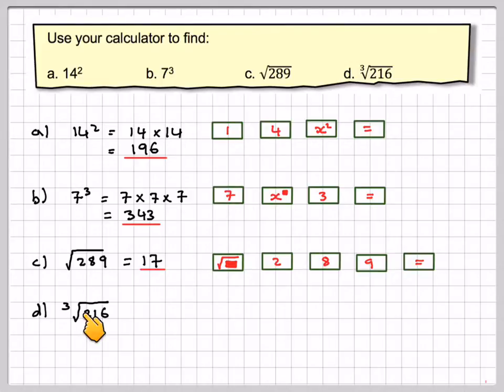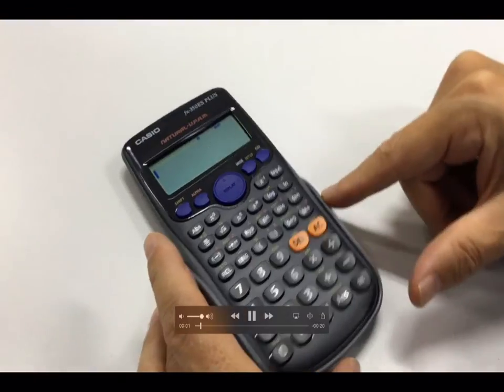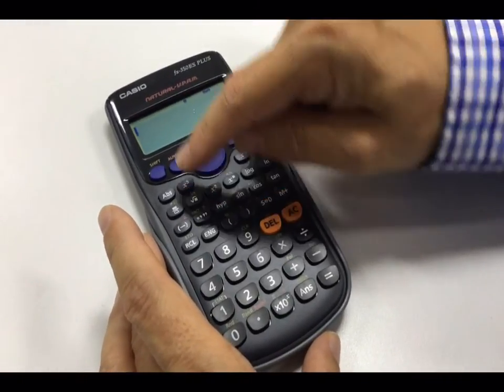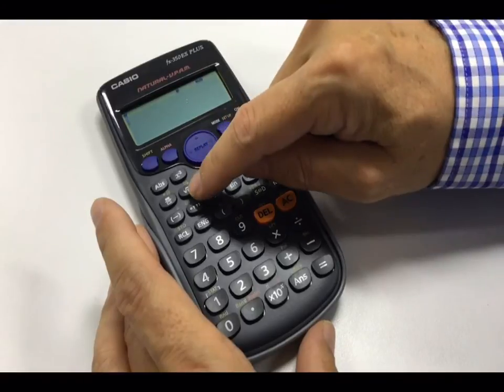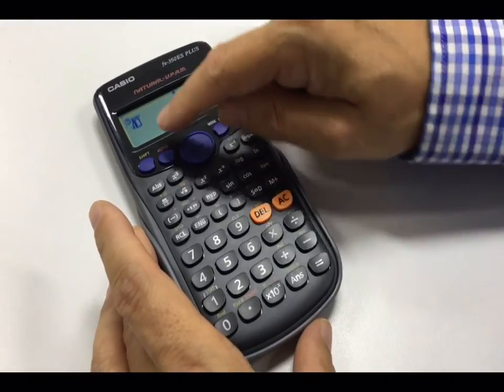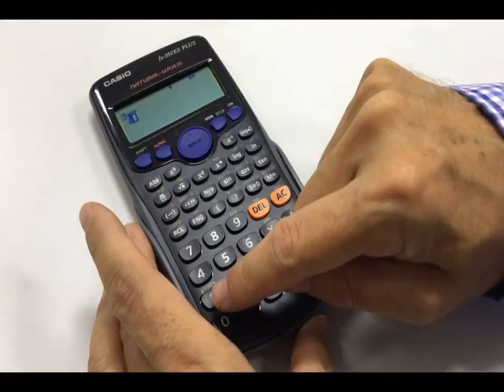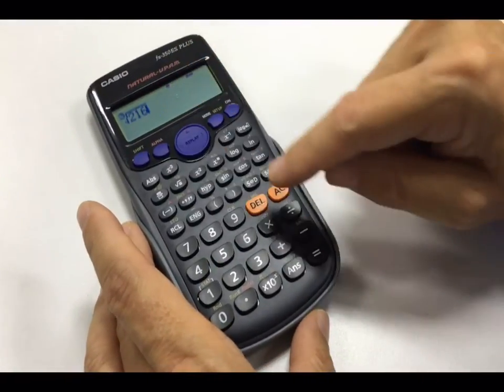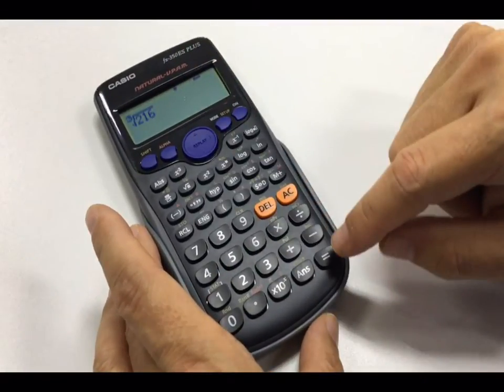we need to do the cube root of 216, so the cube root button is actually above the square root button, so you have to press shift first, the square root button, which brings up the cube root button, you can see, and then write in 216, so we're doing the cube root of 216, and press equals, and we get the answer 6.